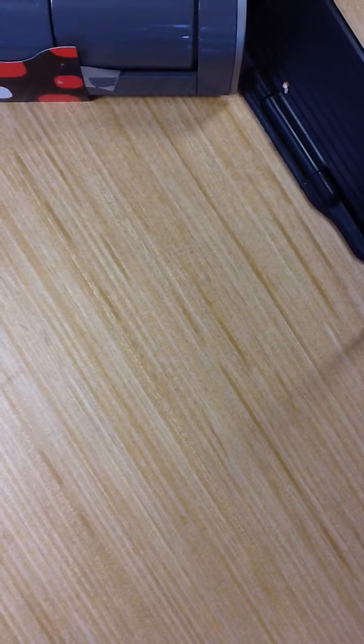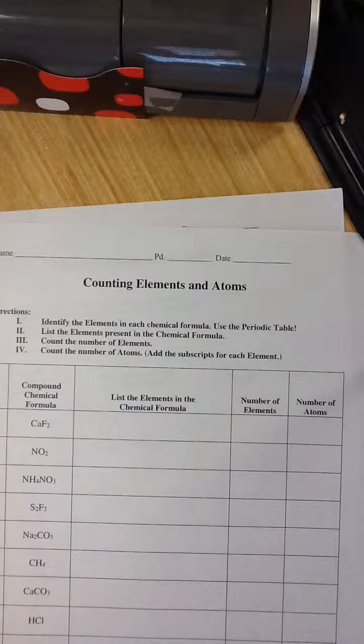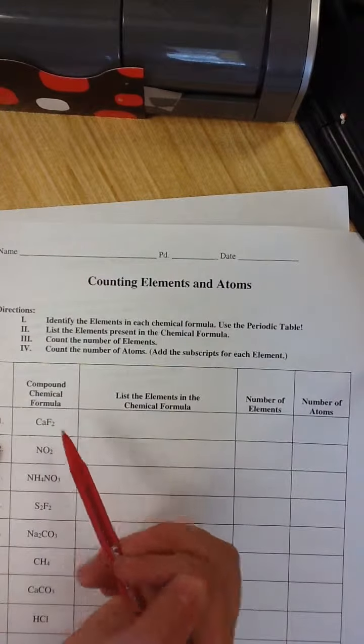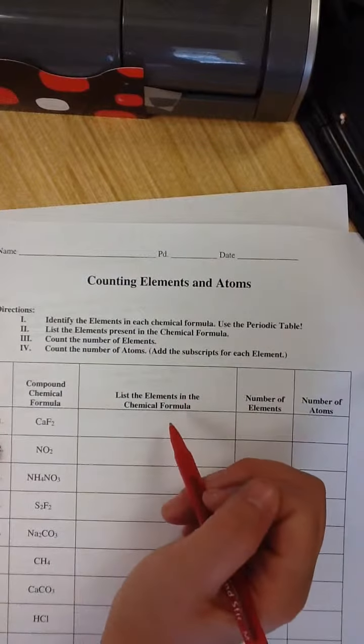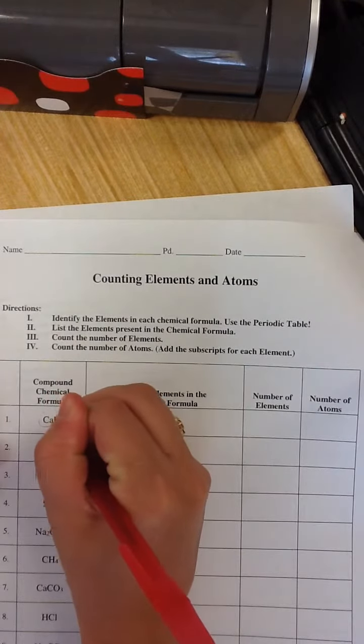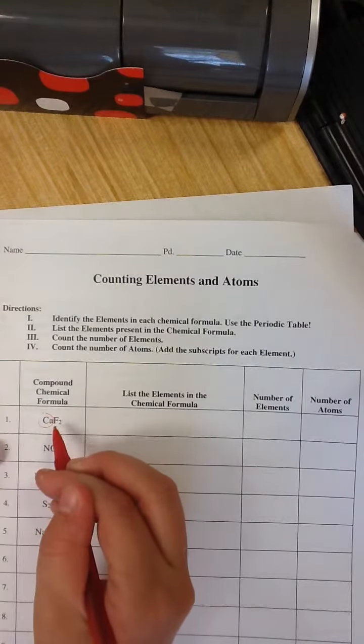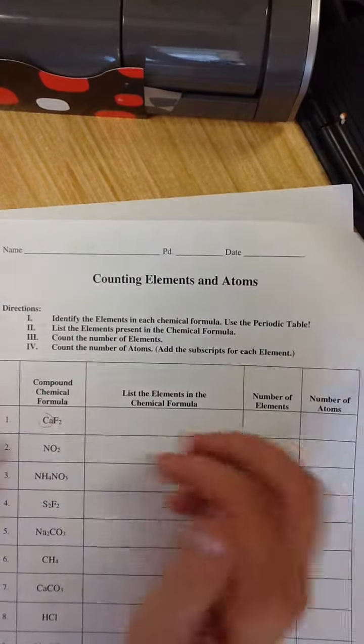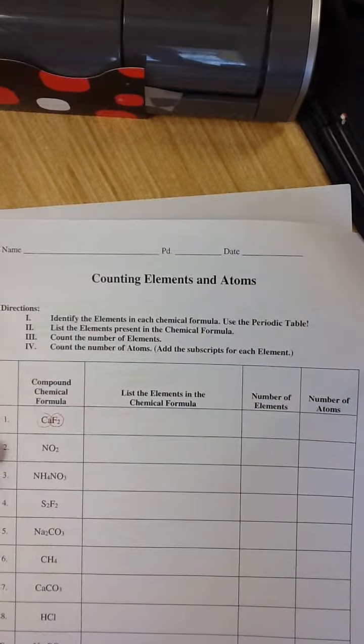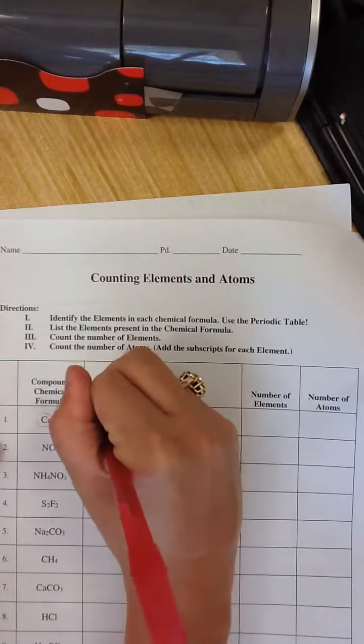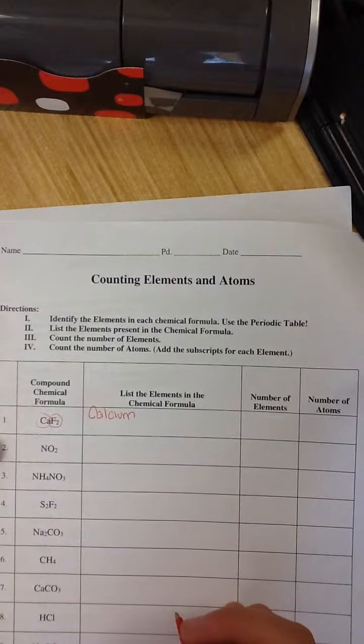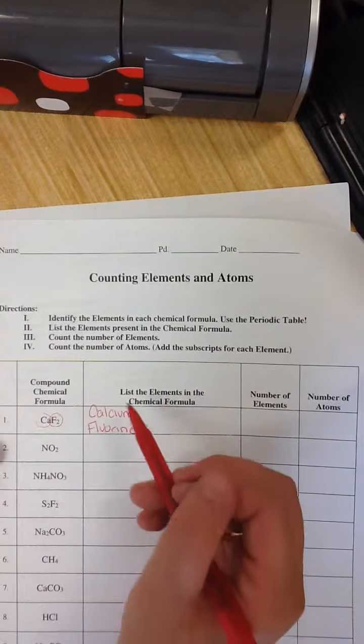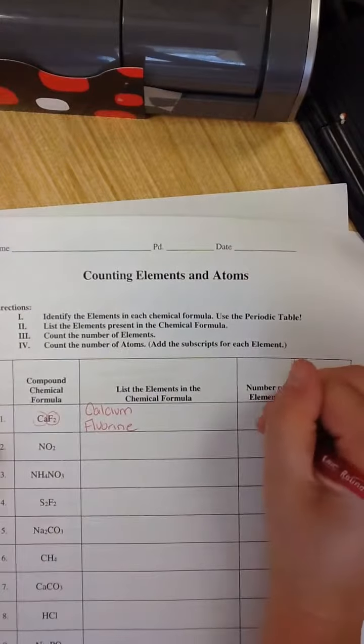All right, now turn to your homework, which is counting elements and atoms. For this homework, you're going to find the compound chemical formula, which is in this column. This is going to be calcium fluorine. You're going to list the elements in the chemical formula. I can tell that this is going to be one element, which is calcium right here, because it has a capital letter at the beginning, but then the lowercase, which represents just one element. That's the way we correctly write elements formulas. Then the F is just one capital letter, so I know it's its own element. I'm going to look at my periodic table, and I find that CA is represented by calcium. And I see that F is represented by fluorine. So I've listed the elements in the chemical formula. I can see that there's two elements in this formula, calcium and fluorine. So that's going to be two elements.